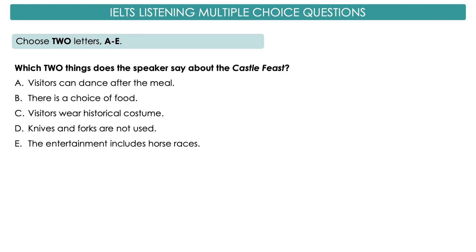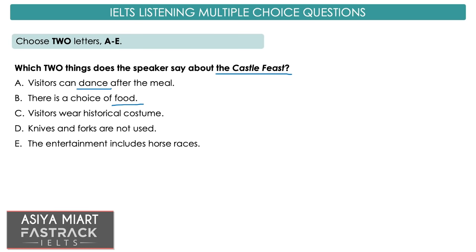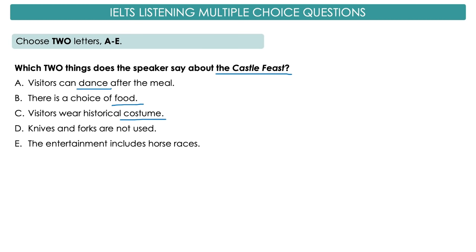Let's read the next question. Which two things does the speaker say about the castle feast? Keywords: castle feast. Options: A — visitors can dance after the meal; B — there is a choice of food; C — visitors wear historical costume; D — knives and forks are not used; E — the entertainment includes horse races. Now please listen and find two correct answers.